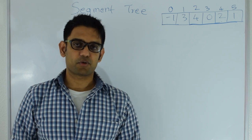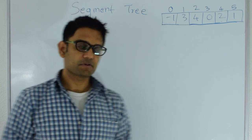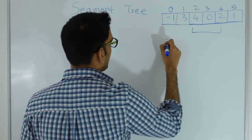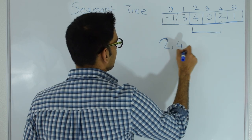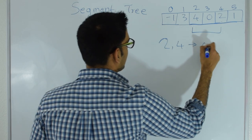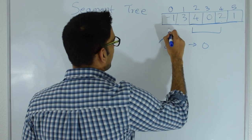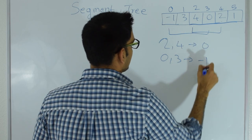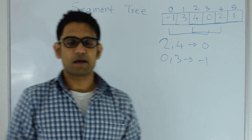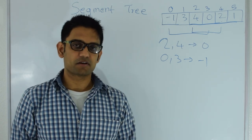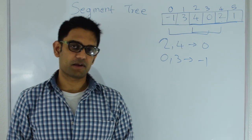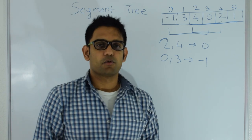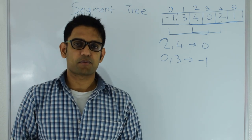Segment Tree helps with range queries in an array. Examples of range queries include: what is the minimum from index 2 to 4 in this array — and that's 0 — or what is the minimum from 0 to 3 in this array — and that's minus 1. Other examples are what is the maximum in a certain range, or what is the sum in a certain range. These are the questions which Segment Tree answers pretty quickly.